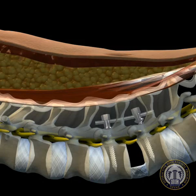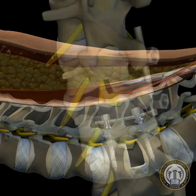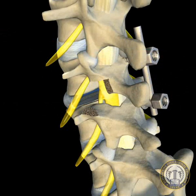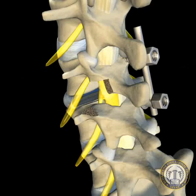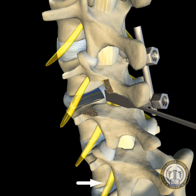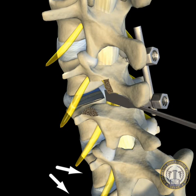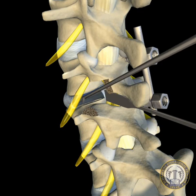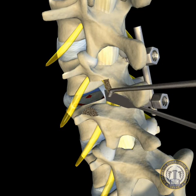Once the optimal interspace distraction has been achieved, end plate preparation is performed using a series of down-pushing curettes and end plate scrapers. A small retractor is used to protect the traversing nerve root, and the exiting nerve root may need to be slightly elevated if performing an L5 to S1 fusion. The cartilaginous end plates are then removed and the bony end plates are decorticated, but left structurally intact.